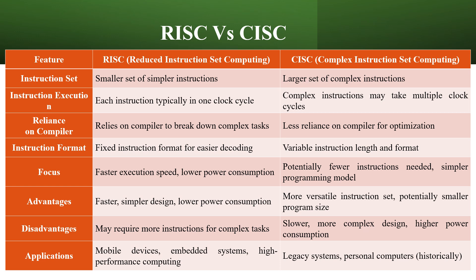RISC forms a pipelining structure — fetch, decode, and execute. CISC uses multiple clock cycles; it is not a single pipeline structure and repeats across multiple clock cycles.